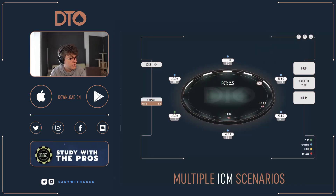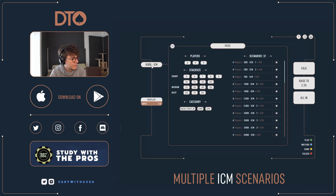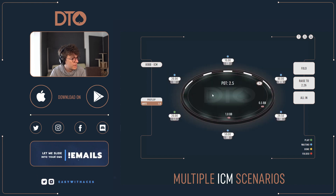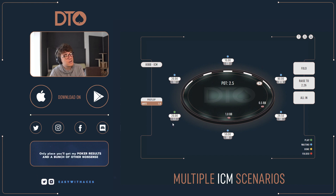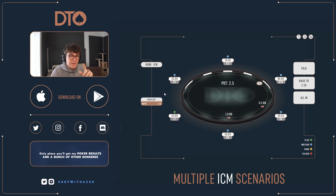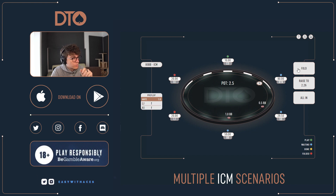This is how the tool looks. You'll see the stack setup — you can click here to change the spot. The stacks are: big blind has 60 big blinds, there's 30, 80, 10, 20, 20. This is a little bit deeper than the spot we actually had, but as you can see, I was on the button with 80 big blinds.